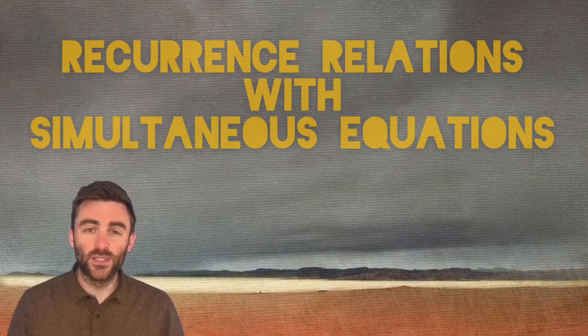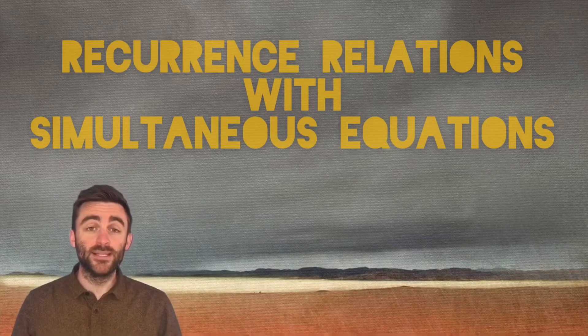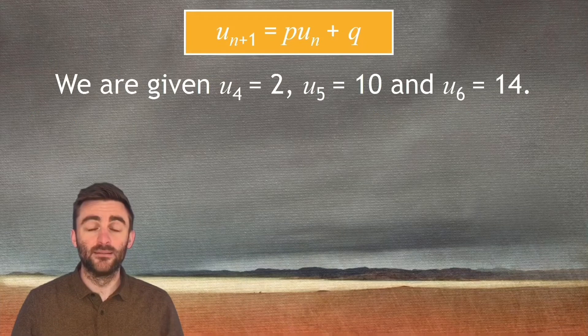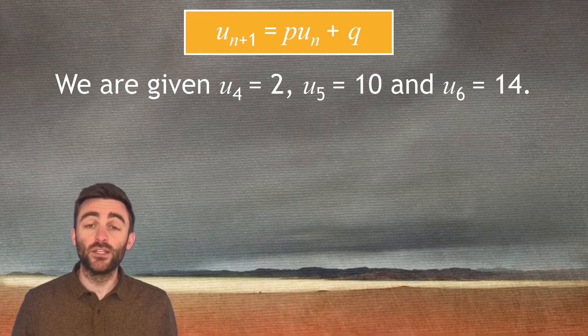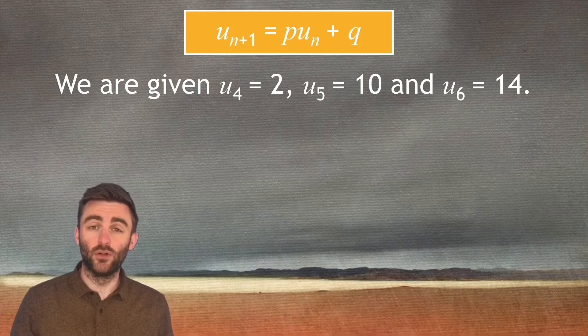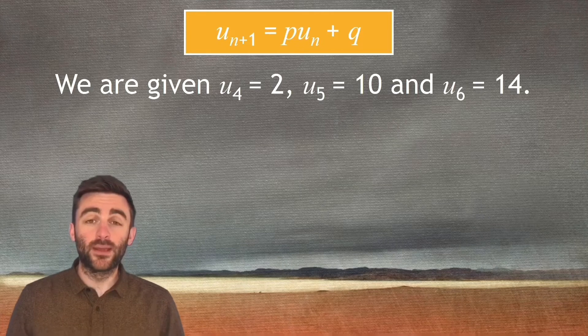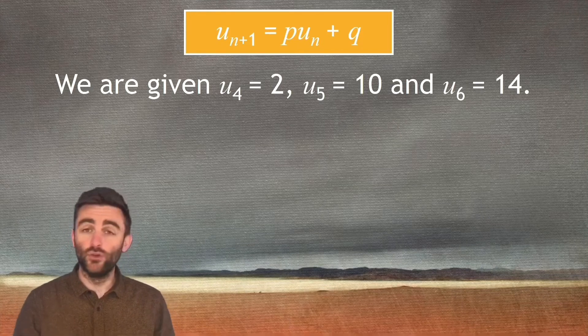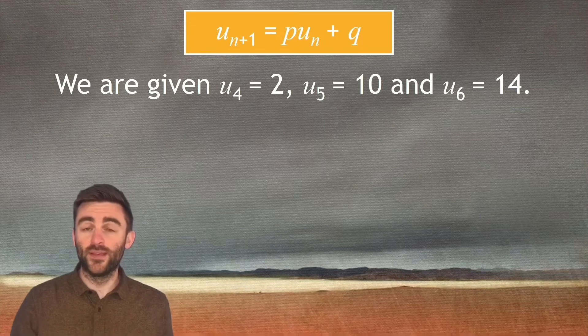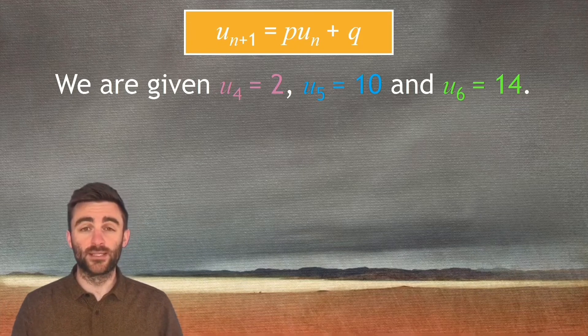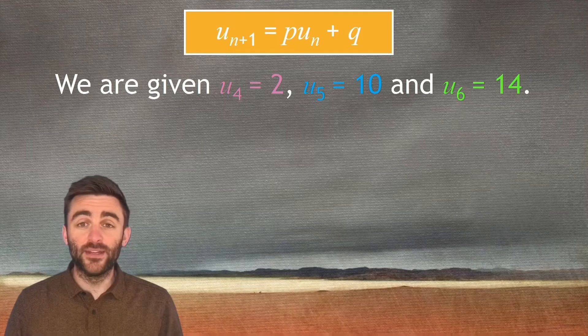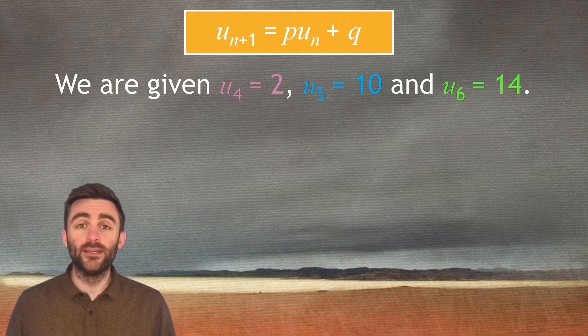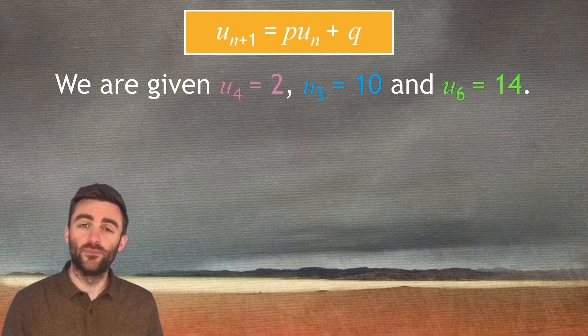The first type of standard recurrence relations question with algebra that we see is set up like this. We don't know the values of A or B, which in this case are called P and Q, but we are given three consecutive terms. So those might be U1, U2, U3, or in this case it's U4, U5, U6. If we're given three consecutive terms, we're always going to use simultaneous equations to solve for the values of P and Q.